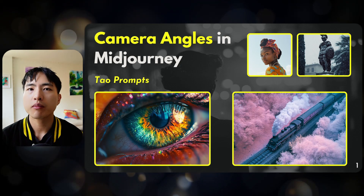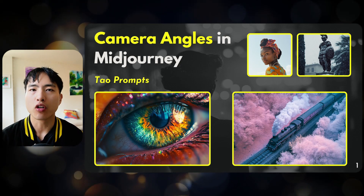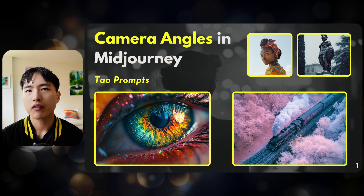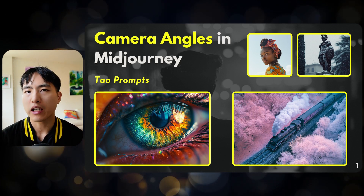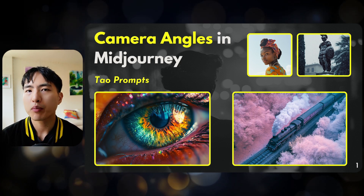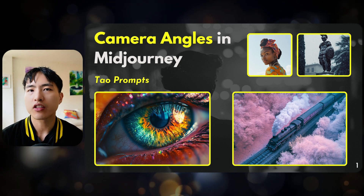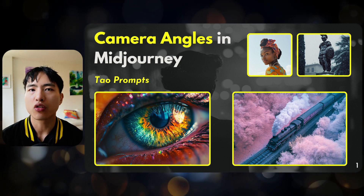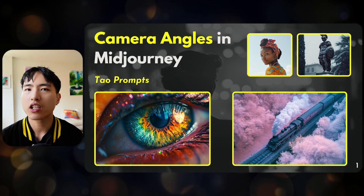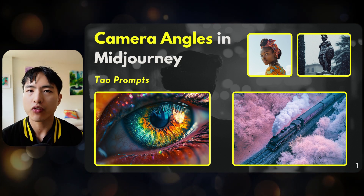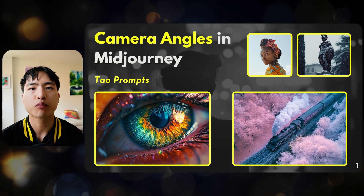Camera angles are an extremely important part of prompting for photos in AI. If you've ever felt like there was an image you could picture in your mind but couldn't quite put it into words, it's probably a good idea to get started by using the camera angle or the camera shot. In today's workshop, we're going to cover everything you need to know about different camera angles in AI prompting.